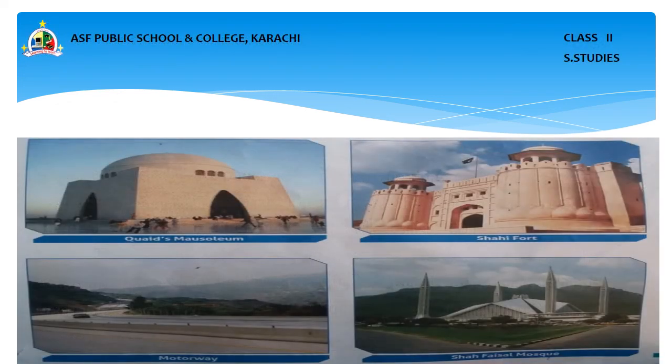These are the important places of our country: number one is Qais Mosque, number two is Shahi Fort, number three is Motorway, and number four is Faisal Mosque.